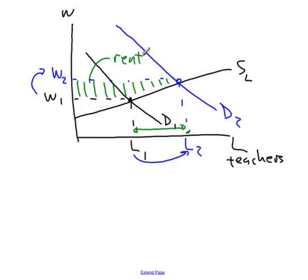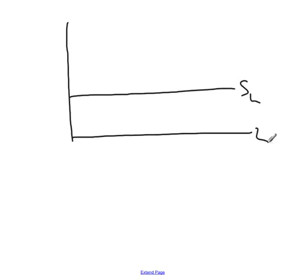That part of the increased factor income is rent. What about the extreme case of elastic labor supply? What if the supply of labor is completely elastic? In this case, you start out...